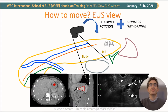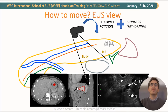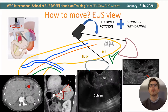Continuing the rotation and withdrawal with gentle upward movement, we will trace the body and tail, and we will also face the kidney, which is anatomically behind the pancreas and at the bottom of our image. This is the landmark of the transition between the body and the tail of the pancreas. Continuing, we will finally reach the spleen and the adrenal gland.